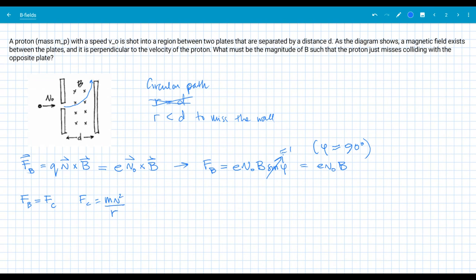So I'm just going to apply that here. And for mass, I have the proton mass v squared, v naught squared over r. r is equal to d in this case, we can see by the diagram. And I'm going to set that equal to my magnetic force, which is e, v naught, b. And we solve for b.